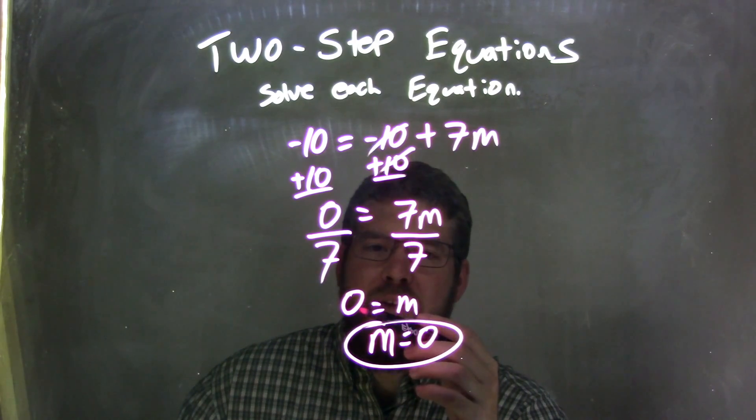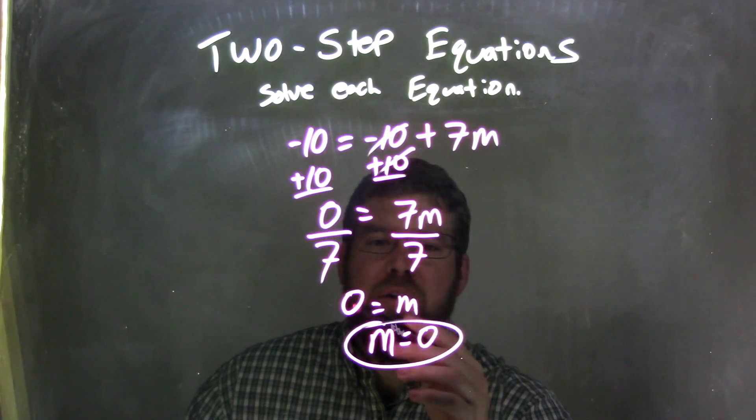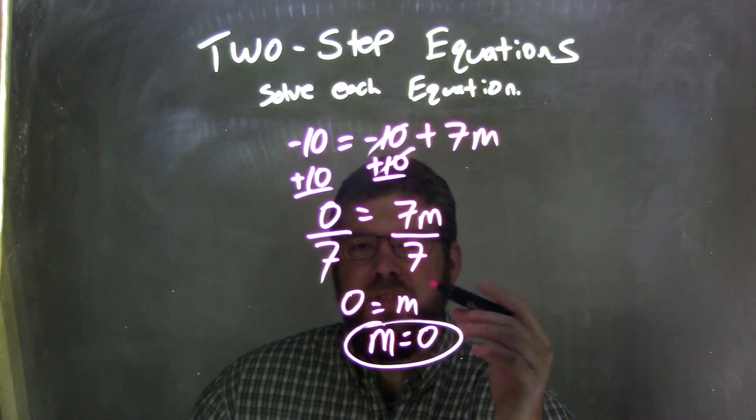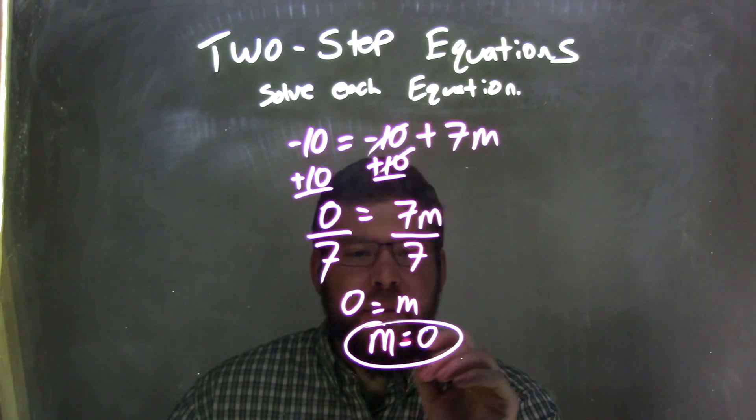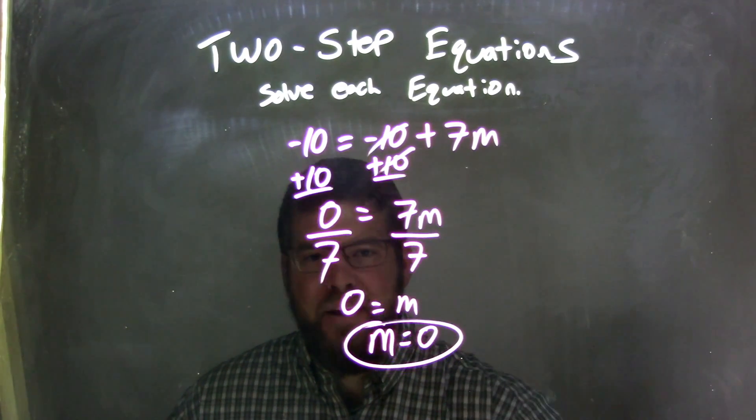and on the left, I have 0 divided by 7, which is just 0. So I have 0 equals m. I can rearrange this to put m first, and so I have m equals 0, which is my final answer.